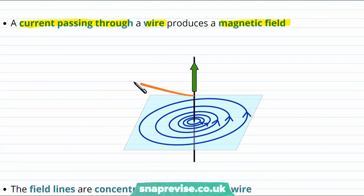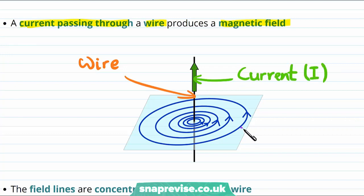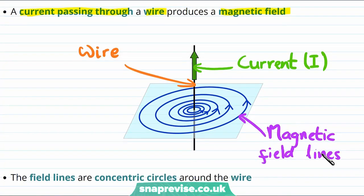So in this picture, if this black line pointing upwards is our wire, and this green arrow shows us that there is a current moving upwards, then these blue lines which are going around the wire are the magnetic field lines. So the magnetic field points around the wire, and in particular the field lines are what we call concentric circles around the wire.